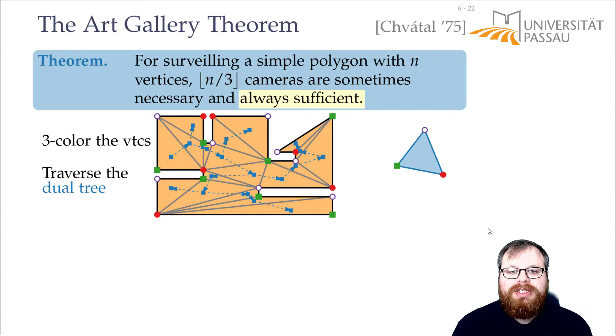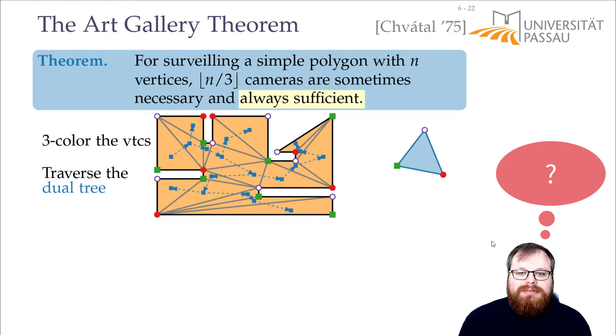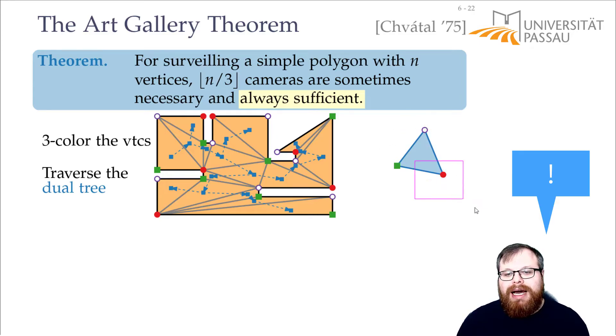And what do we do with these colors? Let's say we pick one color, let's say the green one, and we place a camera on all the green vertices. What does this give us? Every triangle has a vertex of every color on its boundary. So for every triangle we have here, one of the vertices on its boundary is green. That means if we pick all the green vertices, then we have picked a vertex on the corner of every triangle. And so we cover all the triangles.